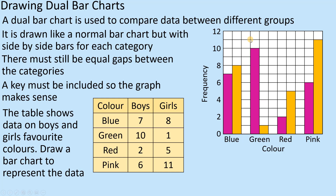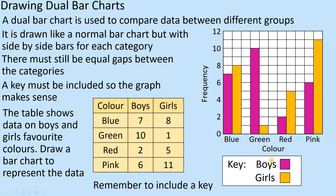Looking at the chart, you would not necessarily know what each bar colour represents, so a key must be included to make the graph make sense. One colour represents boys and the other represents girls. You can choose the colours in most cases, but it might be given to you in an exam. In an exam they probably wouldn't ask you to shade too heavily.